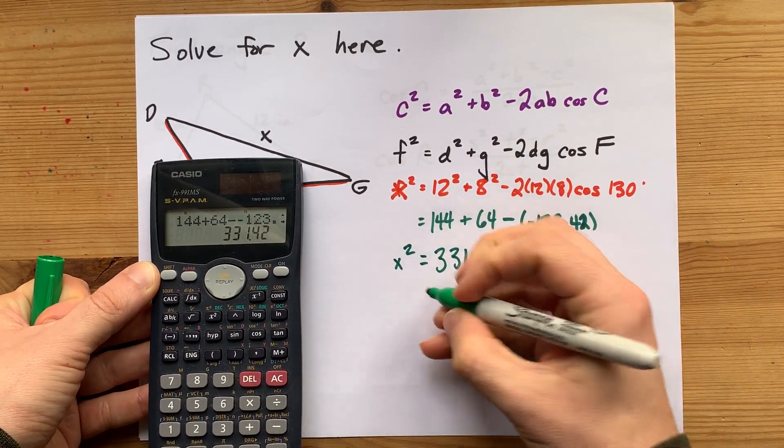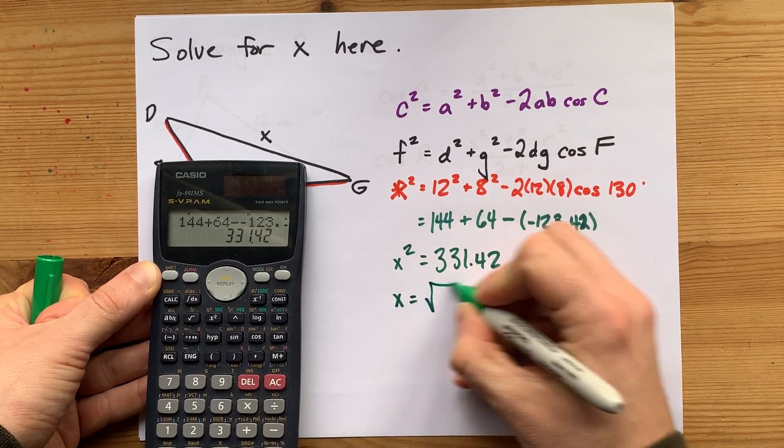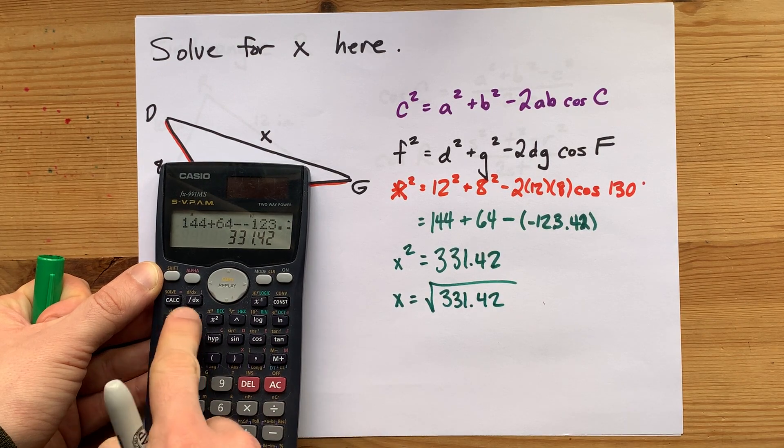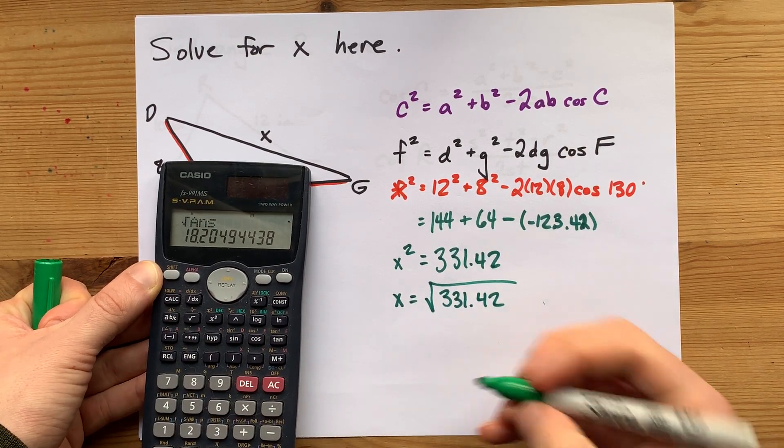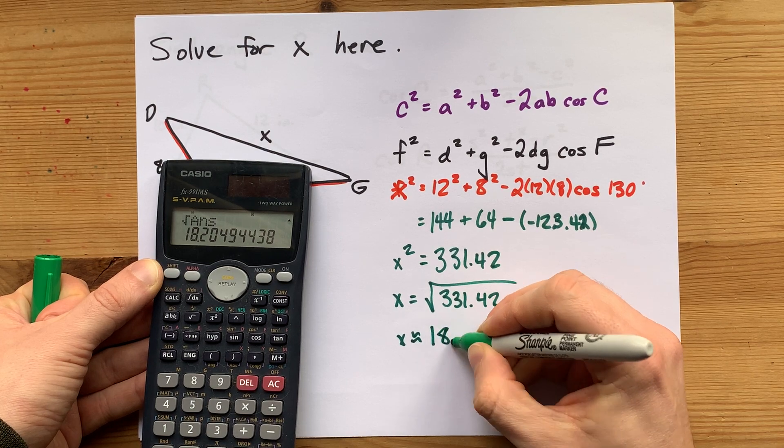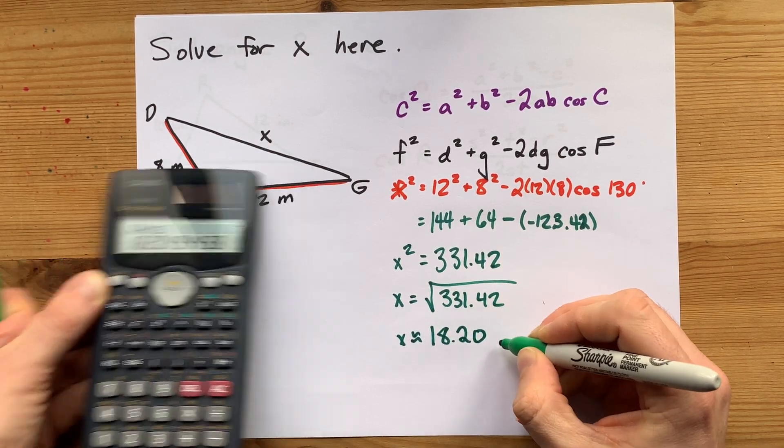How am I going to solve for just X? Well, I have to take the square root of that number. Luckily for me, I got a calculator which will do it for me. So this X, that side length is about 18.20 meters.